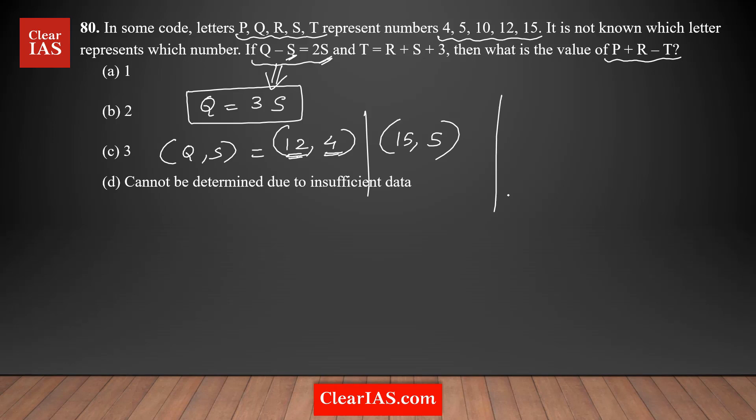Then you have the second condition: T is equal to R plus S plus 3. The only common letter which is common to both equations is S. So what I'm going to do here is figure out two cases, case 1 and case 2. In case 1, I'm picking the value of S is 4, and in case 2, I'm picking the value of S is 5. I'm going to check whether it's possible to find out the values of T and R.